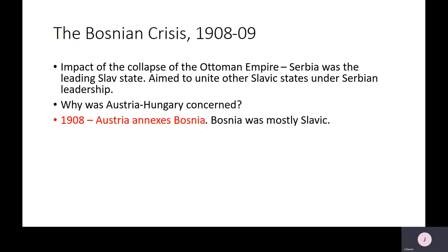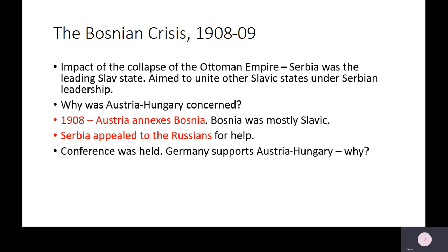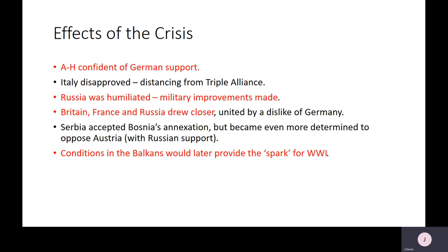Serbia believed they should be taking over Bosnia themselves. Serbia appealed to the Russians for help, as Russia shared a similar ethnic background. A conference was held, and at this conference Germany decided to support Austria-Hungary. This was quite surprising because Germany wasn't entirely pleased — the Austro-Hungarians hadn't consulted Germany before acting. But we start seeing a pattern here: Austria had been the only power to support Germany over Morocco, and Germany now felt it had to repay that favour or risk having no allies at all. Russia was therefore forced to back down.